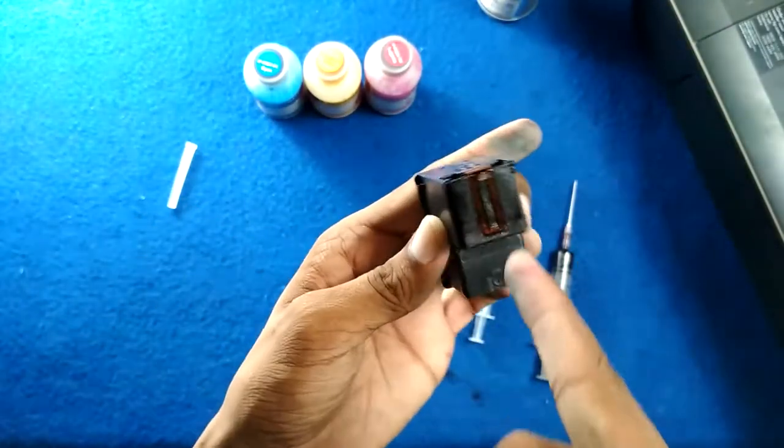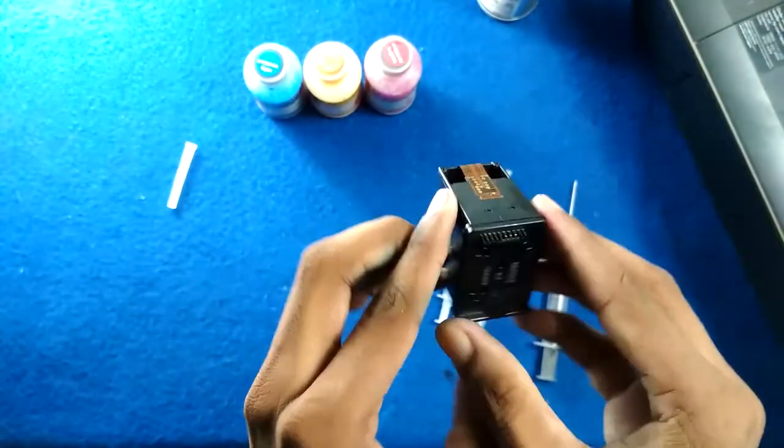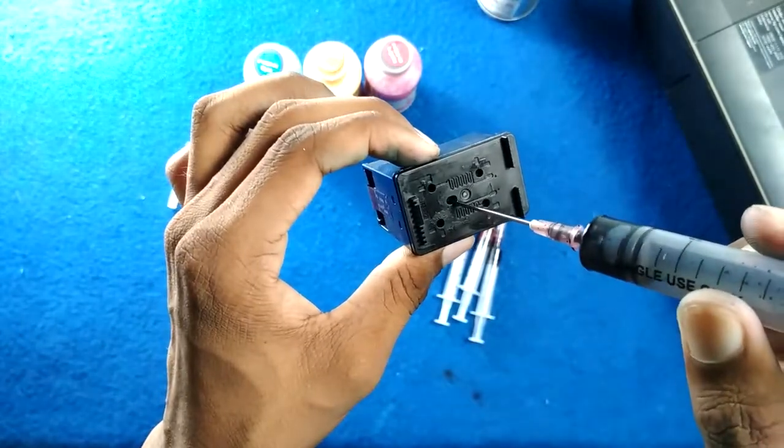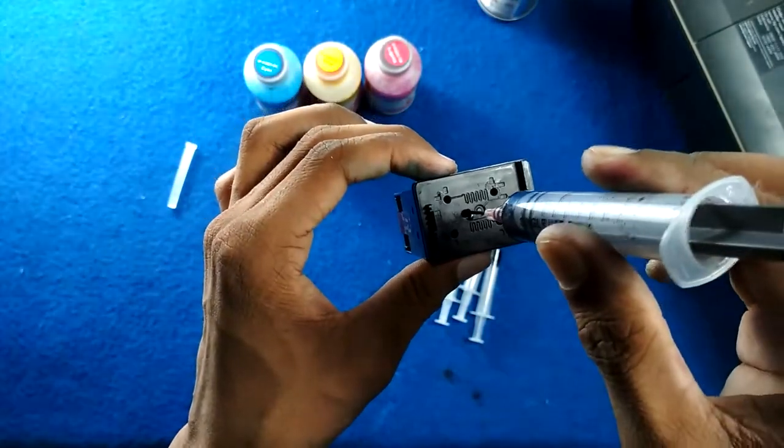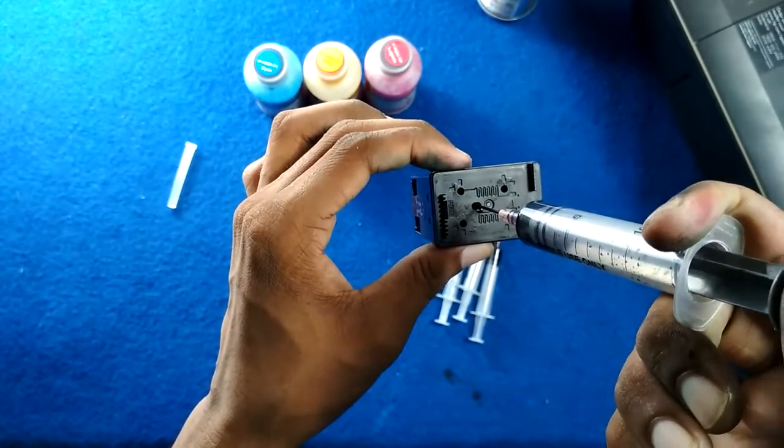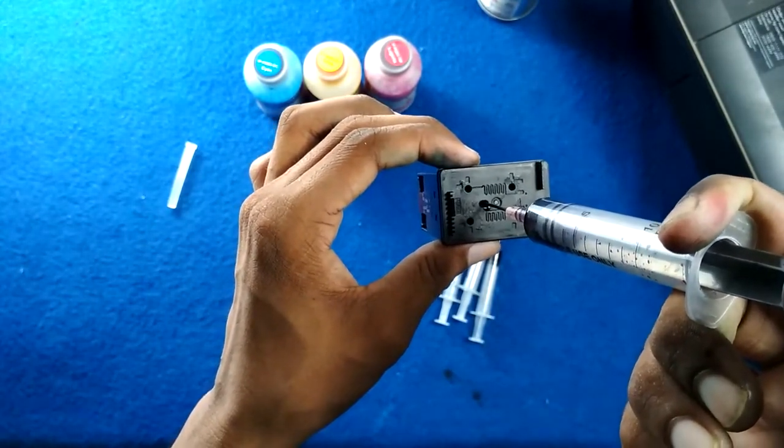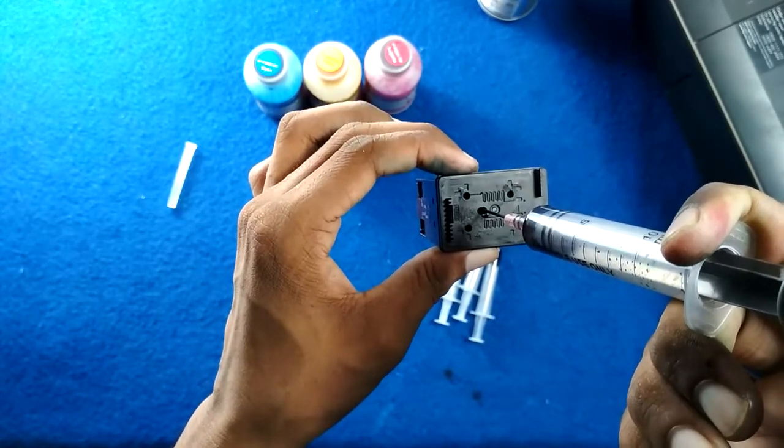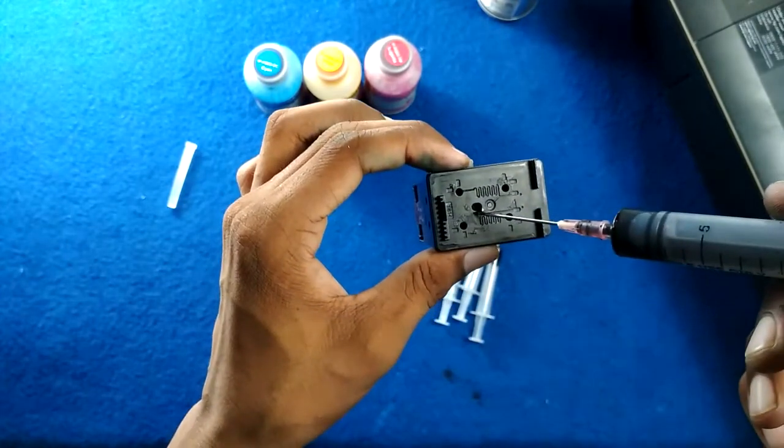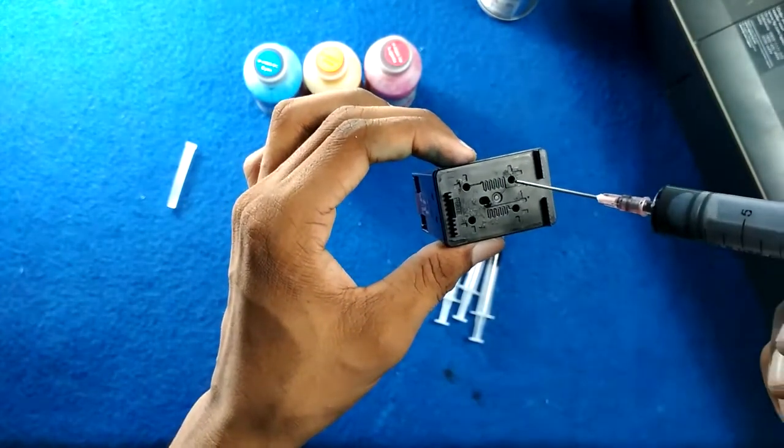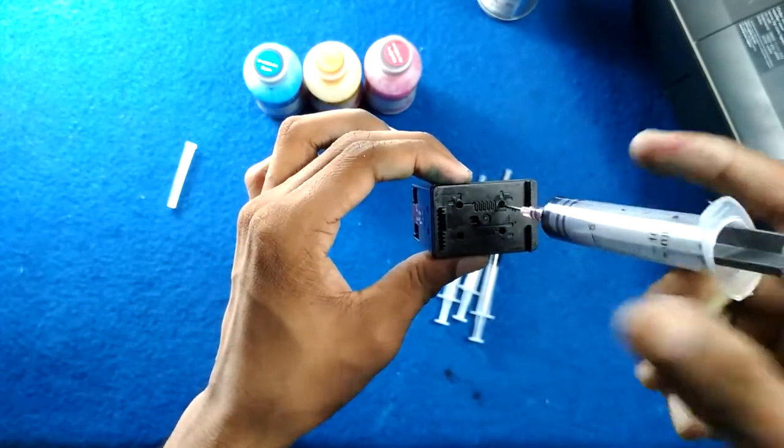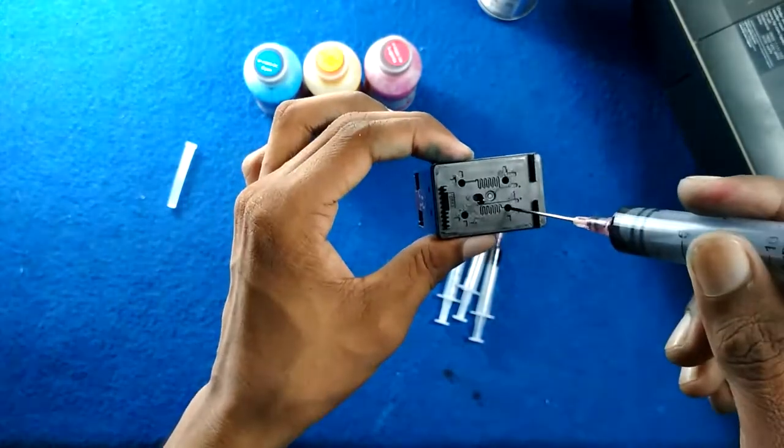Now, without touching the nozzle and the copper connection, take your needle and enter it in the main hole. Put some in and then push it back. Then refill it, not all the ink, but about 1ml. And then fill it in the other two holes, and then in this one.